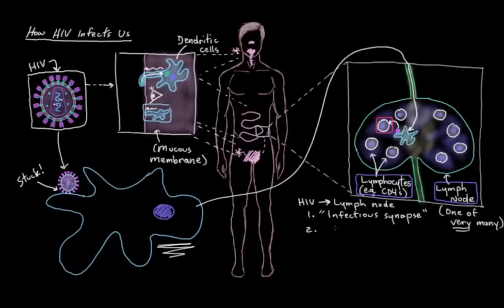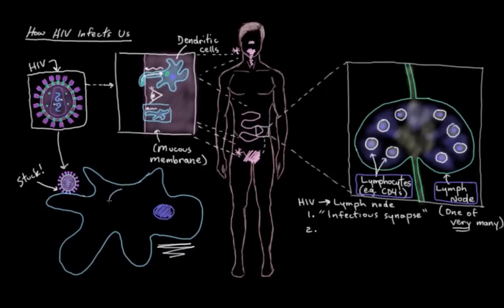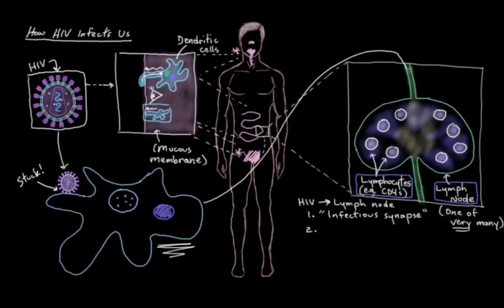Another way is where the dendritic cell endocytoses a group of HIV particles, brings that endocytosed group to the lymph node, and then exocytoses them right inside the lymph node, where all the other immune cells get exposed to them and can thus get infected as well.